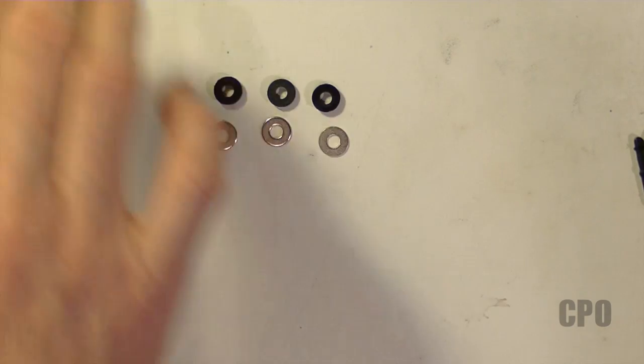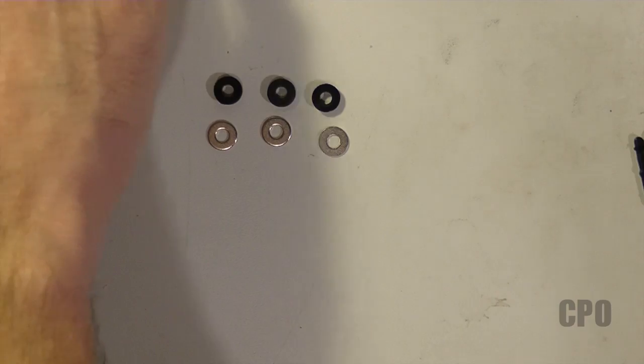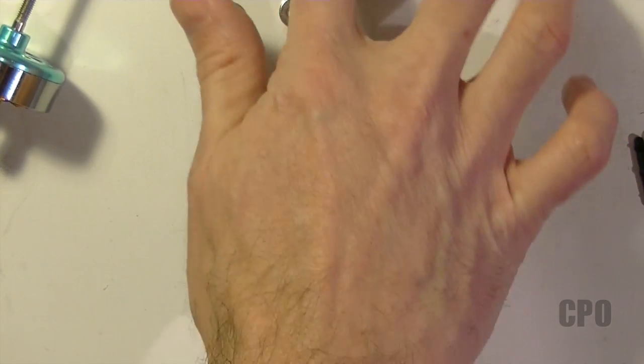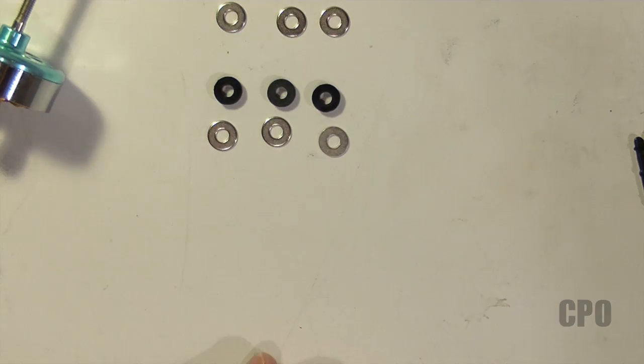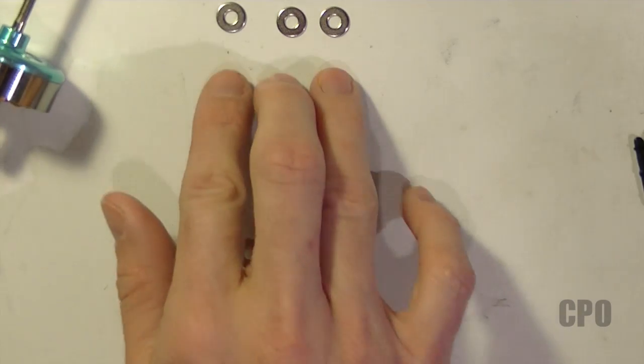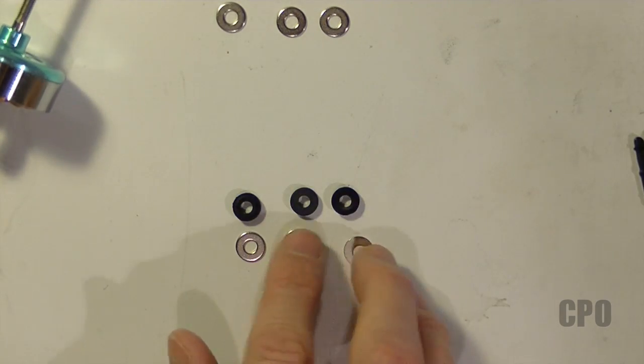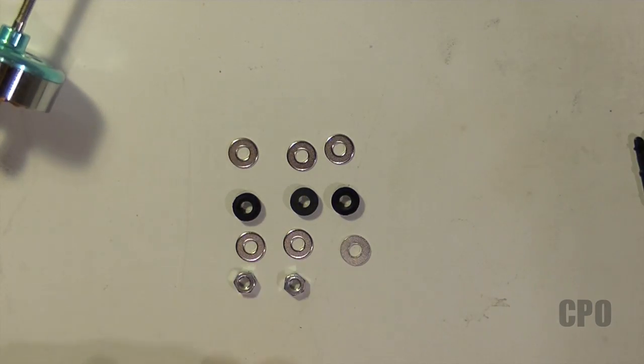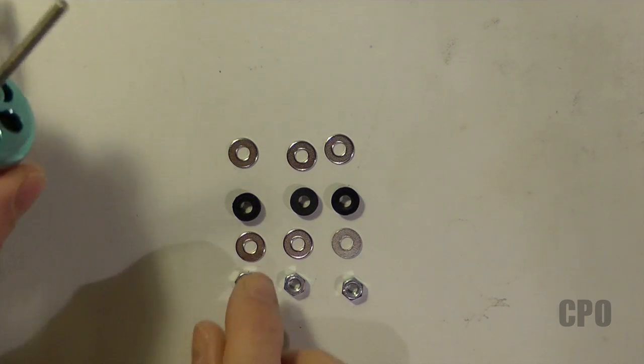In addition to the prop adapters, I'm also going to use a washer that fits below the prop and then another washer that fits above the prop. These washers are about 11/64ths of an inch or right around 4.3 millimeters inner diameter. I'm also using a nut.